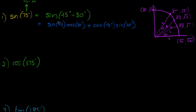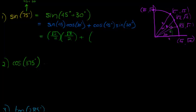Now we can go and replace the values. Sine of 45 degrees: sine is y over r, so that is square root 2 over 2. Cos of 30 degrees is x over r, so square root 3 over 2. Plus cos of 45 — the same as sine of 45 because those two values are the same — that's square root 2 over r, which is still 2.